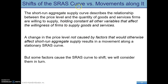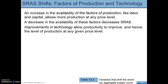We have the same distinction between shifts of the curve and movements along it. A change in the price level not caused by a shifter is just a movement along the curve. If we have a shifter, that shifts our short-run aggregate supply curve. Anything that shifts the long-run aggregate supply curve also shifts the short-run aggregate supply curve — labor, capital, natural resources. For example, a wave of immigration brings new workers, which would shift both LRAS and SRAS. If technology improves, that also shifts short-run aggregate supply.